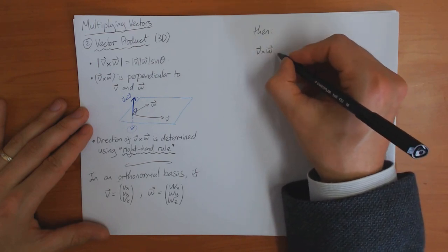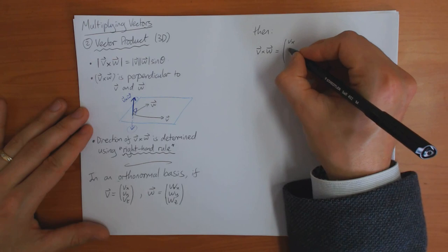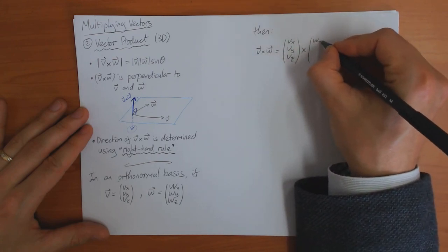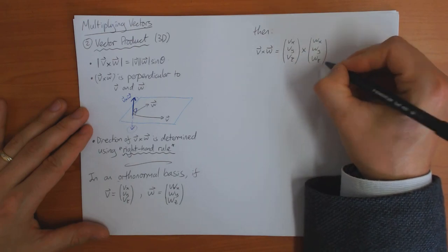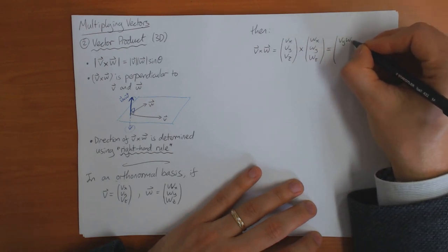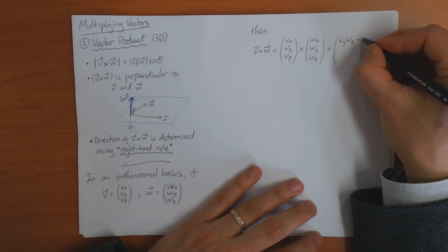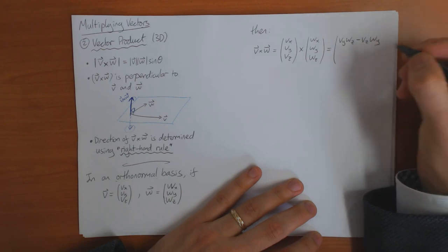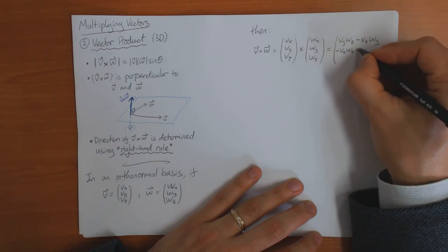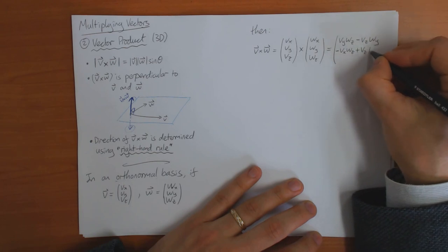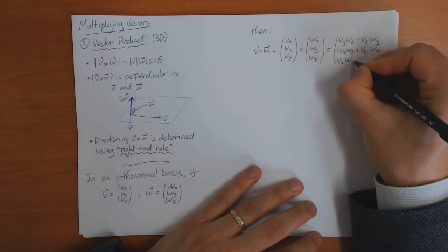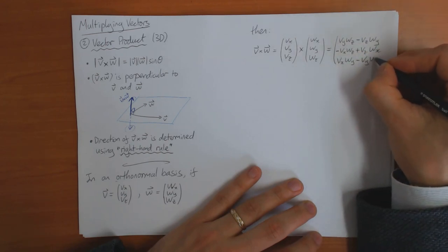v cross w, given by (vx, vy, vz) cross (wx, wy, wz), is equal to (vy·wz − vz·wy, −vx·wz + vz·wx, vx·wy − vy·wx). So that's quite a complicated formula, but luckily there's some symmetry and an easy way to remember it.